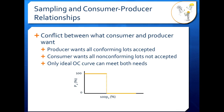Unfortunately, only an ideal OC curve can meet both of these needs. We see a very sharp drop-off between 100% acceptance and 0% acceptance at a certain percentage nonconforming. OC curves for food products generally do not look like this — the only way you can have an ideal OC curve is if you have 100% inspection, which is not practical for food products.